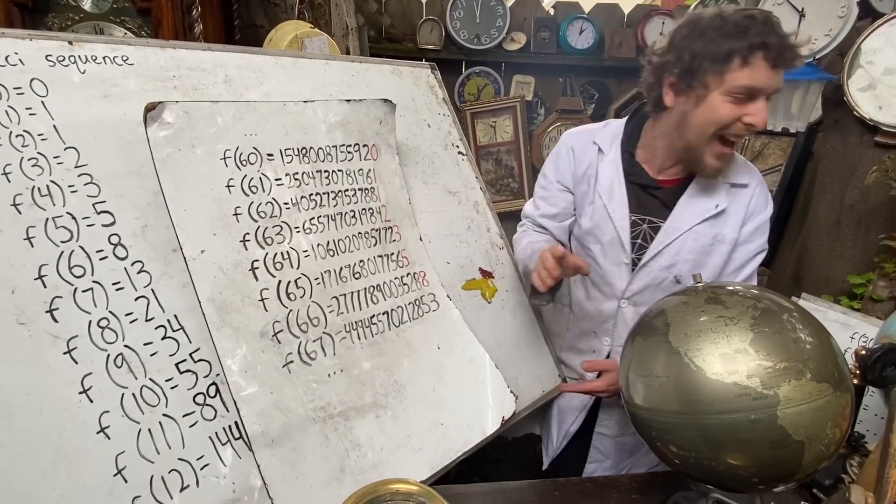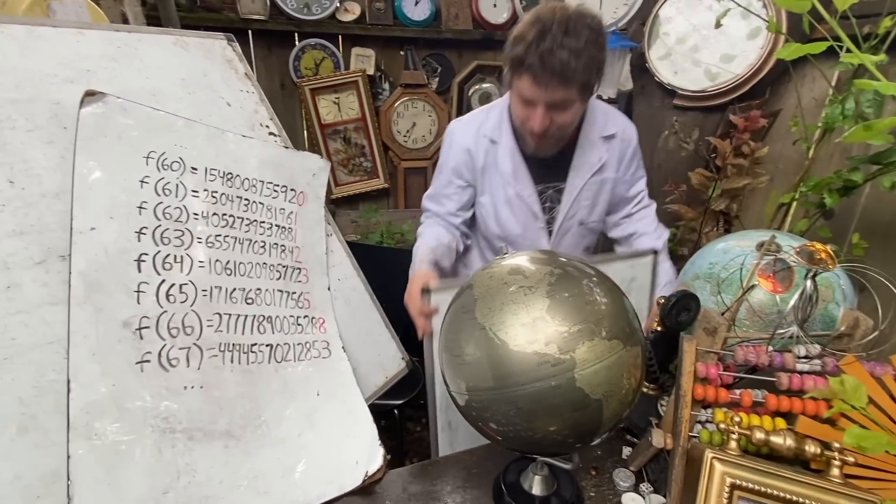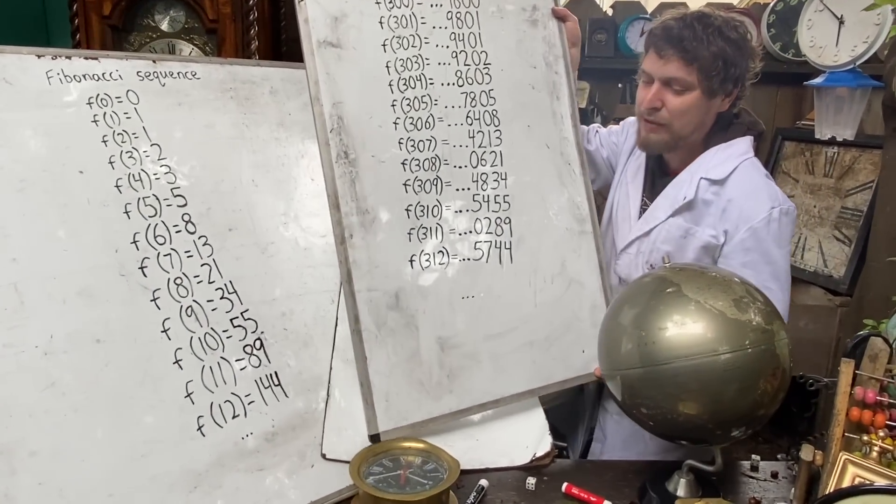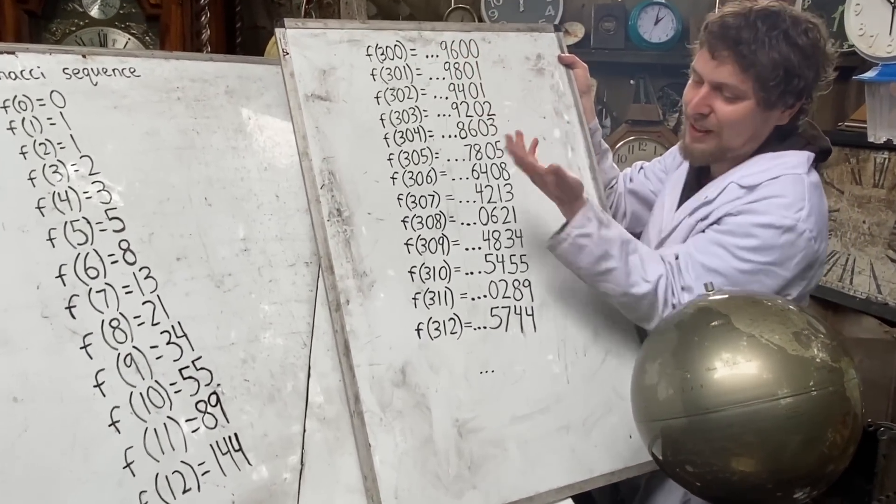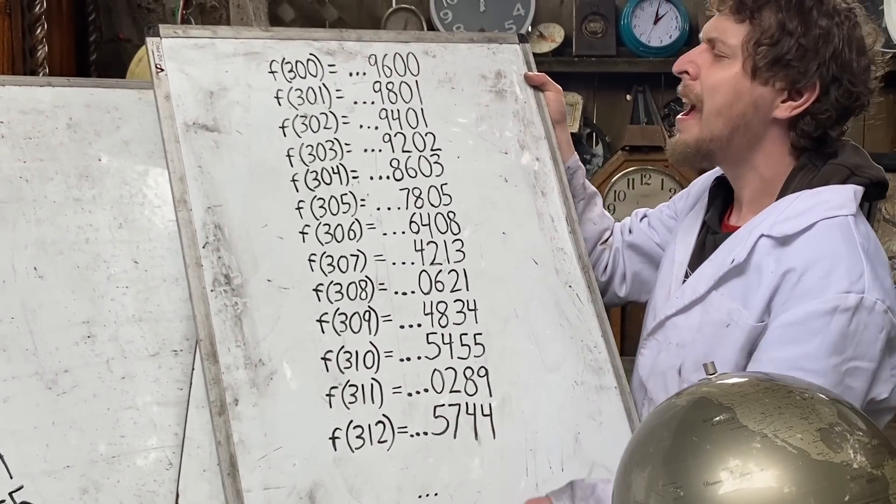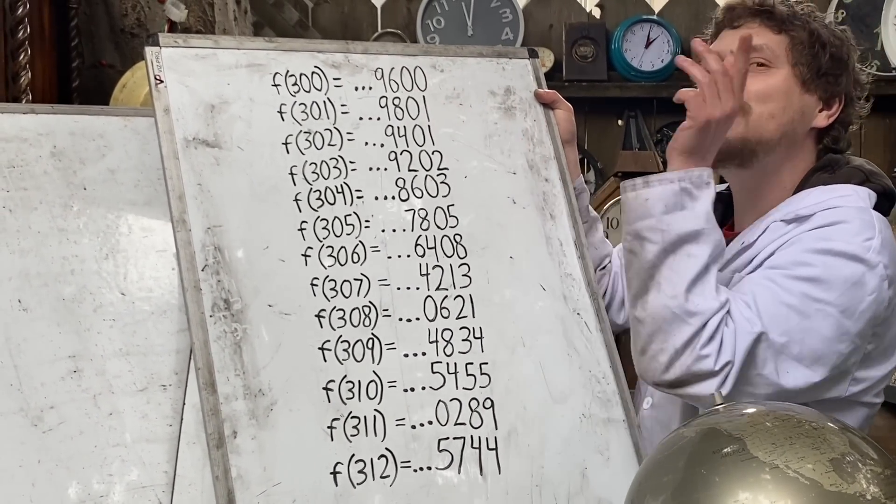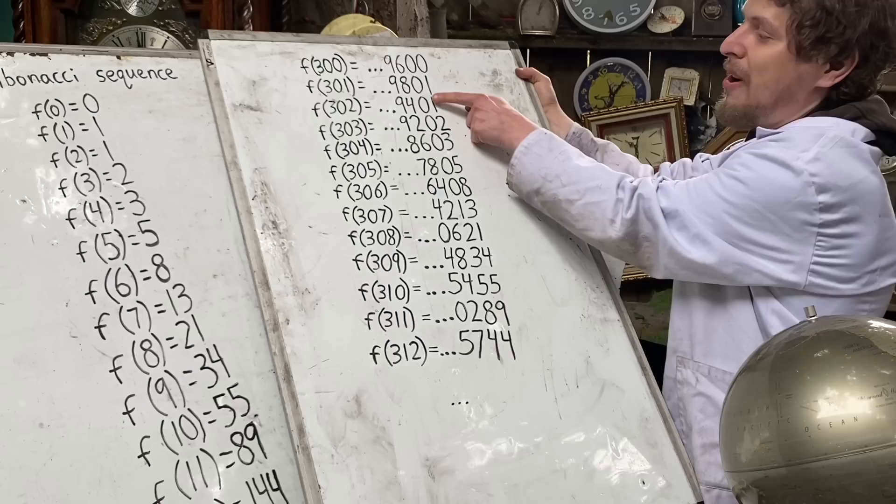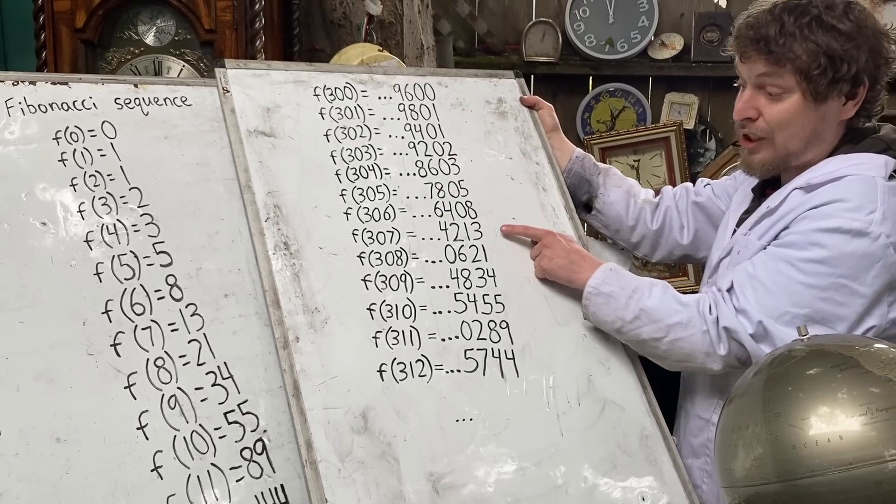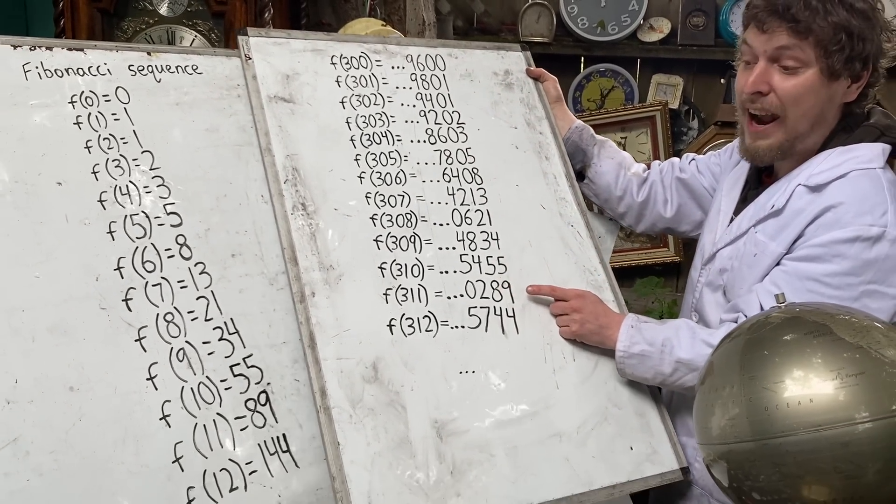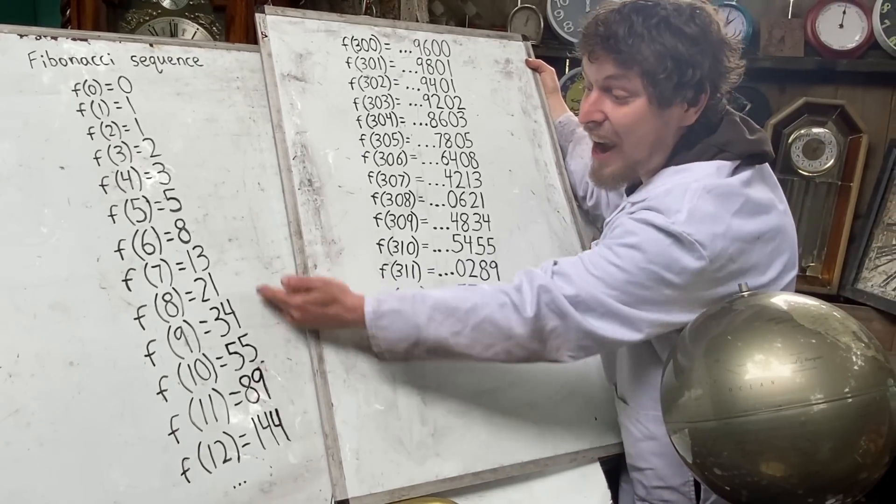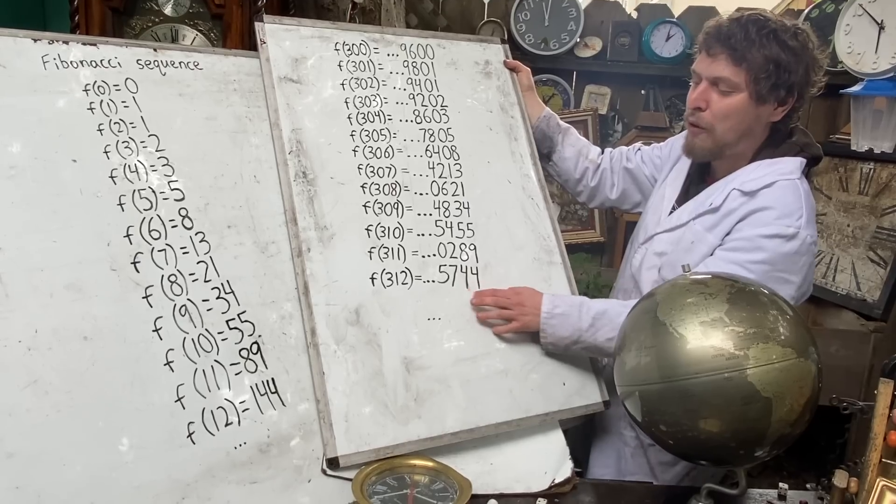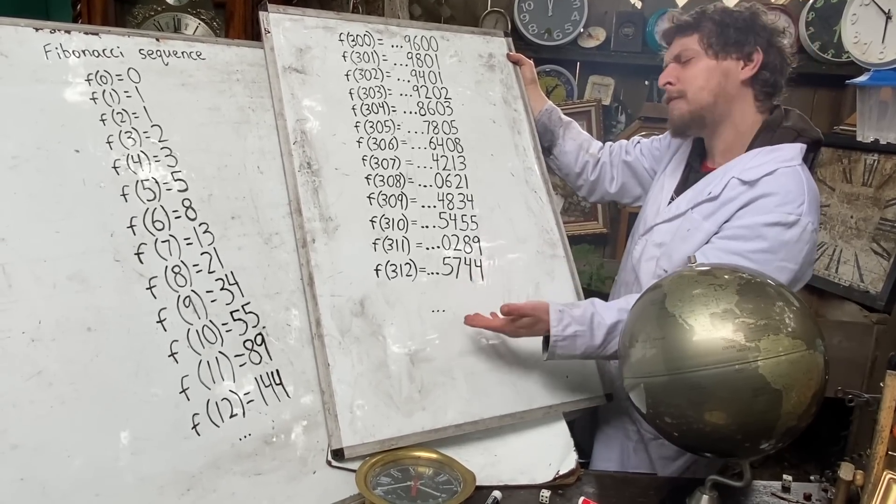But if we jump ahead even further, say to the 300th Fibonacci number, where I've just written the last four digits of these Fibonacci numbers from the 300th through 312th, now it seems that the last two digits are in on this pattern. 0-1-1-2-3-5-8-13-21-34-55-89, the same as those Fibonacci numbers before it's almost like 144, but overflows in a way.